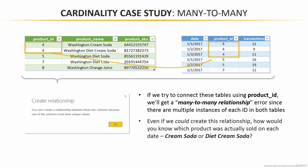Let's step back and think about this. Even if we had some magical way to force this relationship to stick, it really just doesn't make sense logically. We know that product number four was sold 12 times on January 1st, nine times on the second, 11 times on the third. But since ID number four is associated with multiple product names, how do we know how many of those transactions were for Washington cream soda versus Washington diet cream soda? There's no way to make sense of this data with the tables in this kind of form.